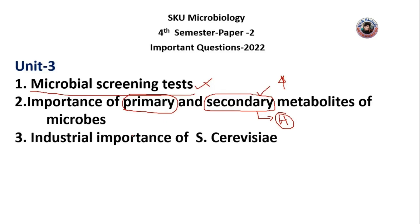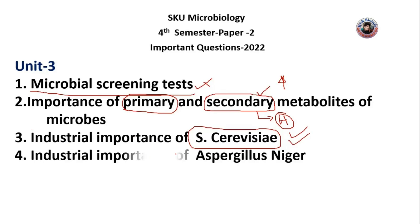The second important question is the industrial importance of Saccharomyces cerevisiae. This is a very important organism at the industry level, used in fermentation and many applications. The fourth important question is the industrial importance of Aspergillus niger, which plays a very important role in high-level industrial production.